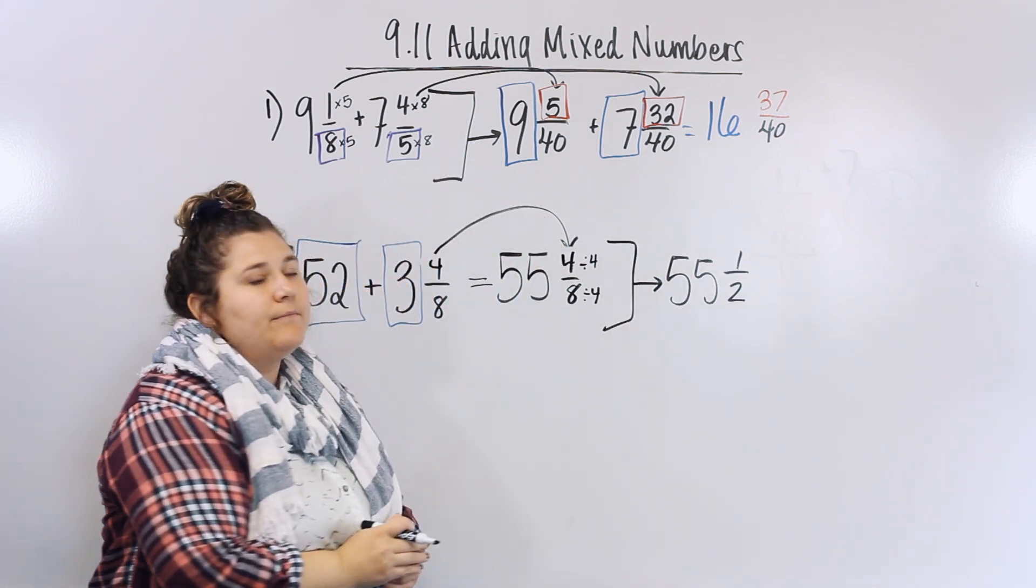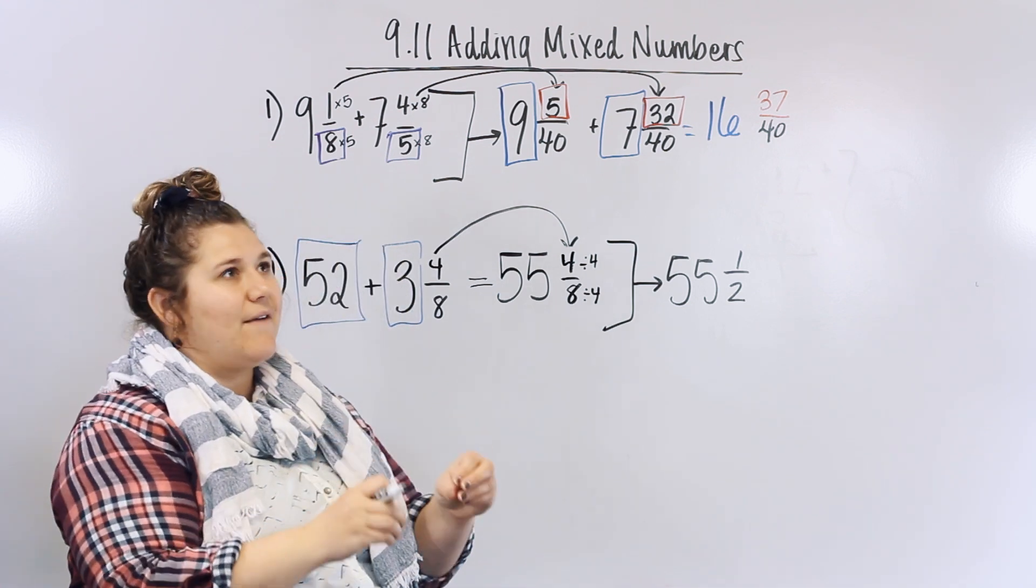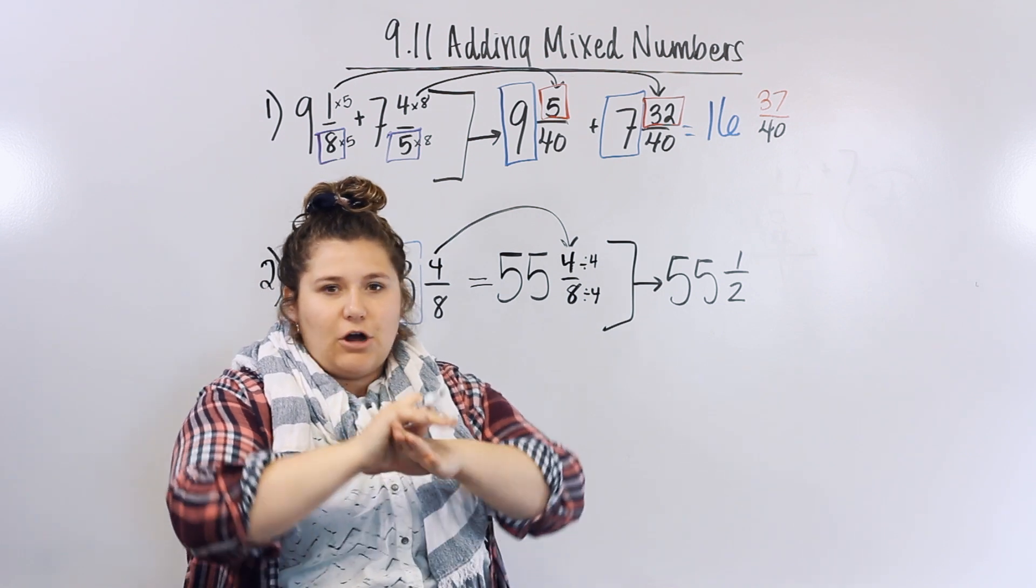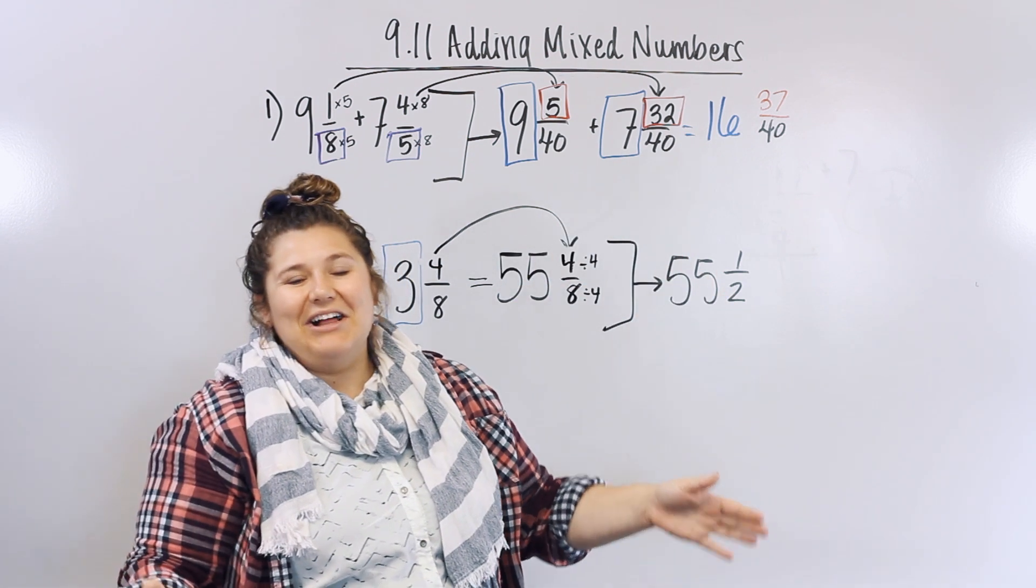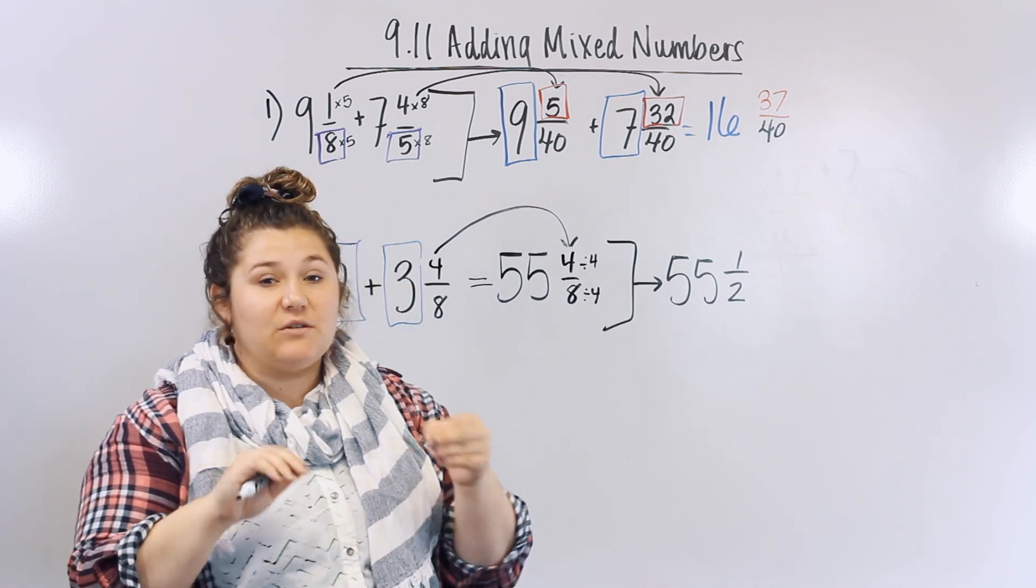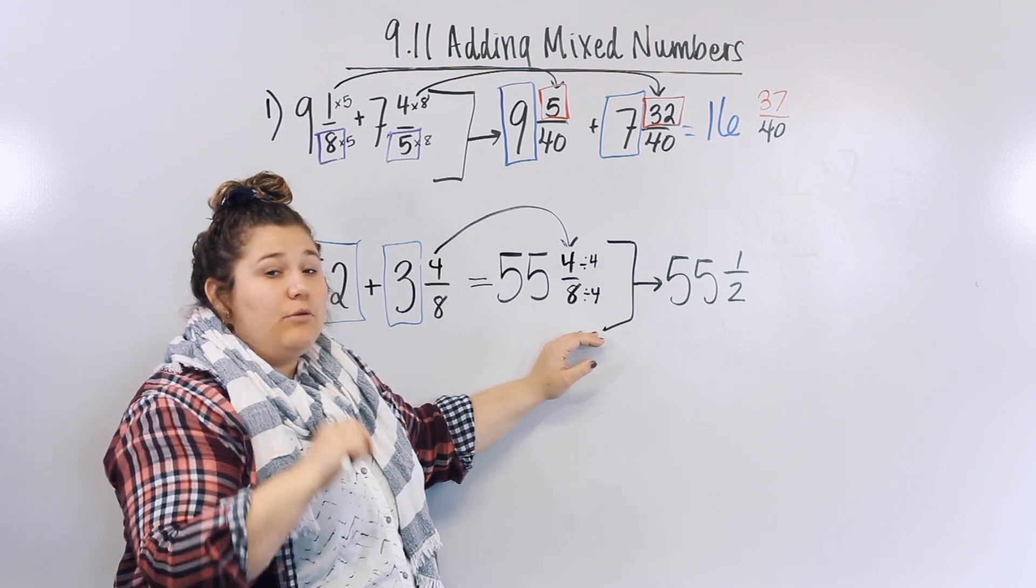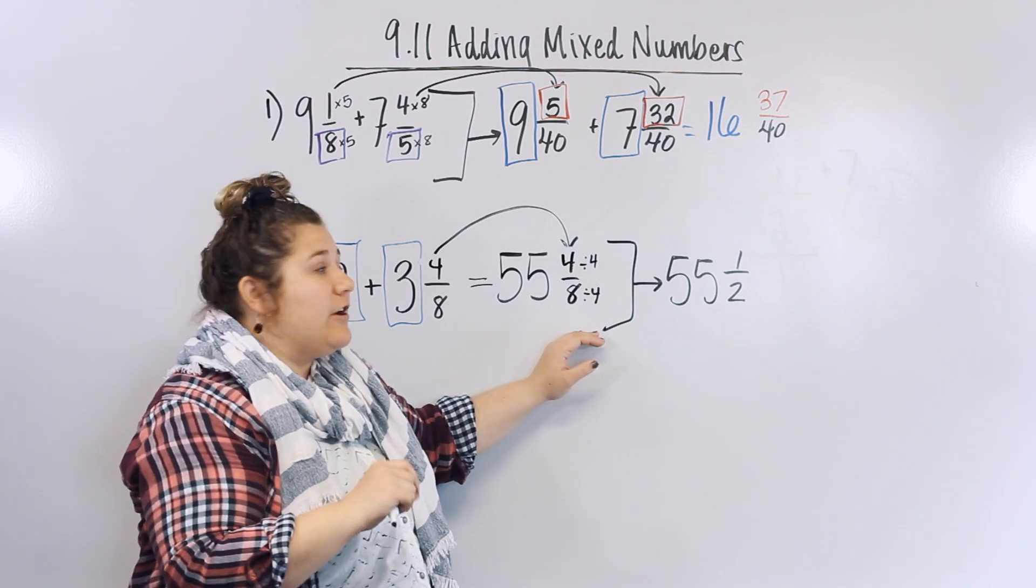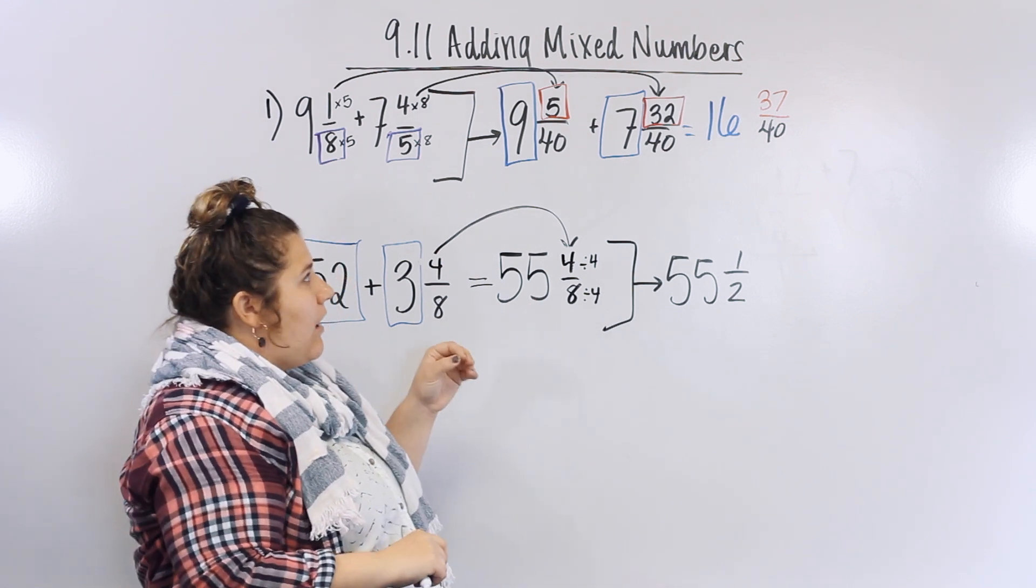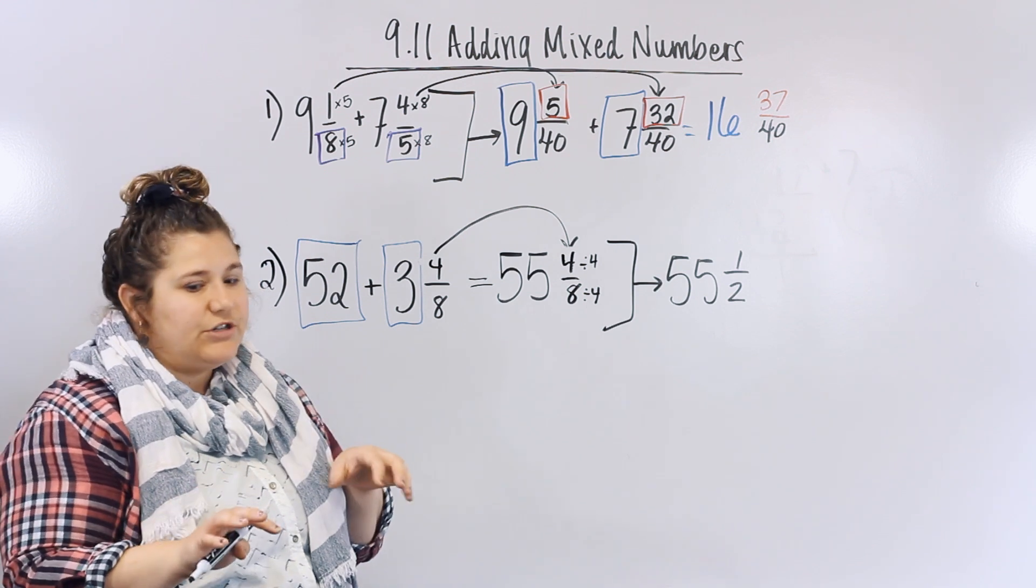So I've noticed a few of you not simplifying. Guys, you have to simplify. That's why I told you before all this internet learning started that you have to know your multiplication tables, because it will really help you figure this out. It will really help you figure out how to simplify, what numbers can go into what numbers.